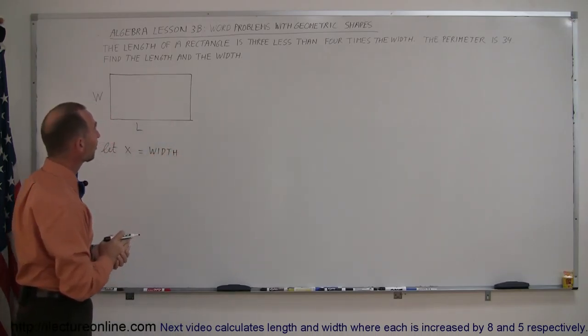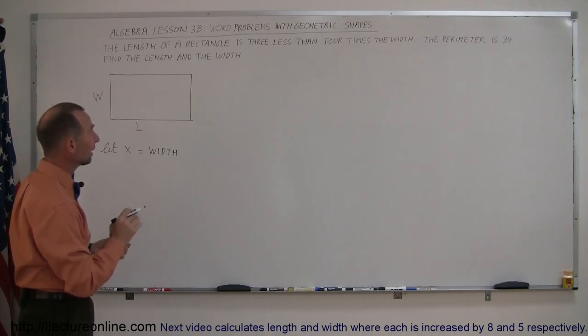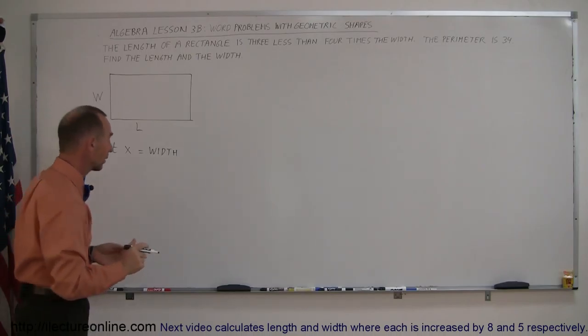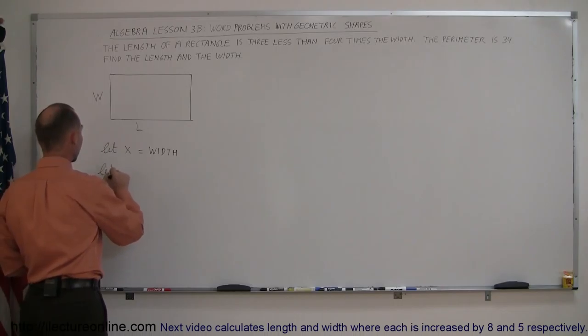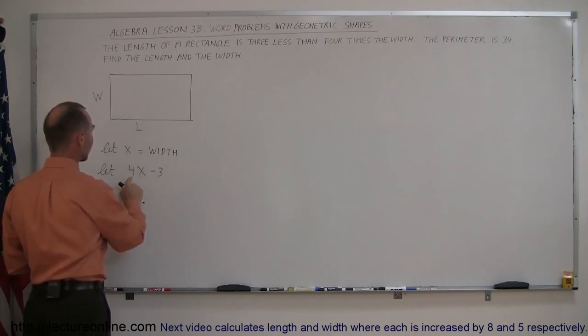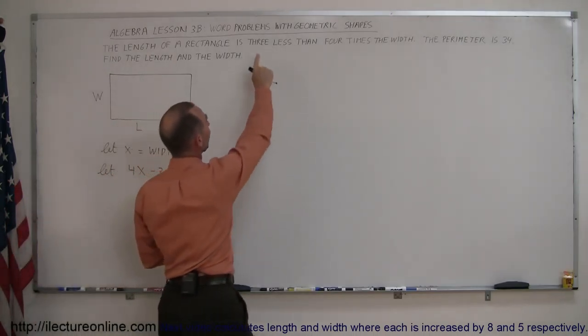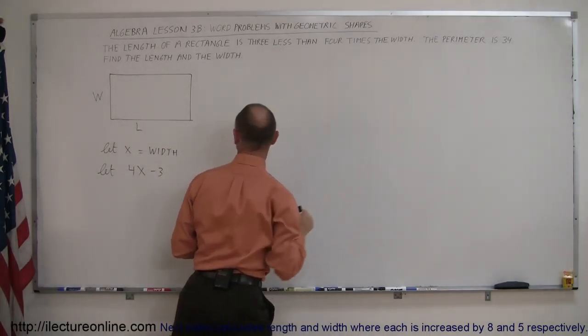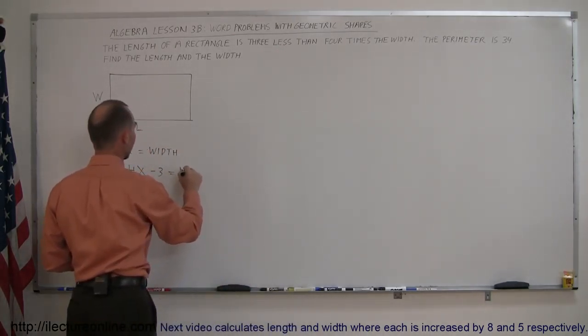Then, how do we express the length in terms of x? Well, it says here that it's 3 less than 4 times the width. So, let 3 less, that's minus 3, than 4x. So this is 4 times the width minus 3, which means 3 less than 4 times the width. And that will represent the length.